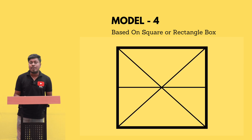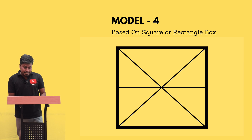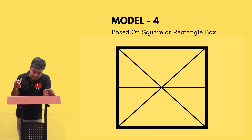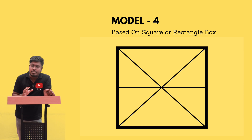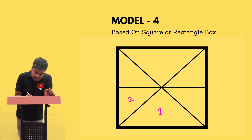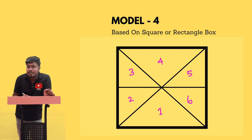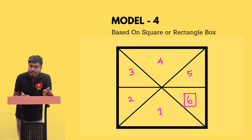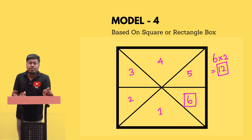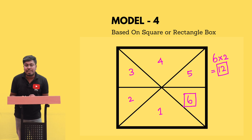Let's look at another example with a square box divided into multiple triangles. Just put down the numbers: one, two, three, four, five, six. The maximum number is six. Multiply six by two — that gives twelve. Finally, there are twelve triangles in the given image.